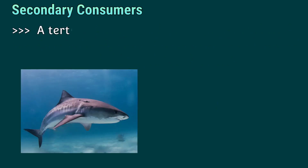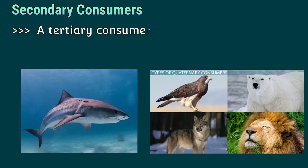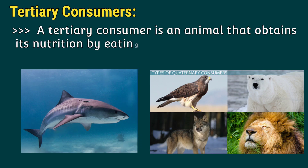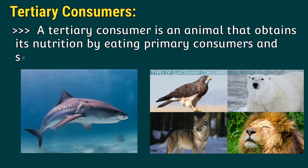Tertiary consumers are animals that obtain their nutrition by eating both primary consumers and secondary consumers.